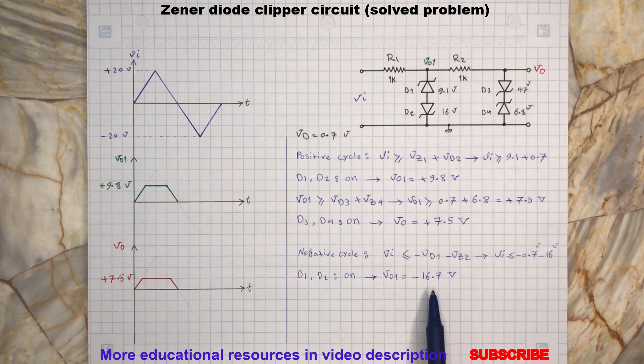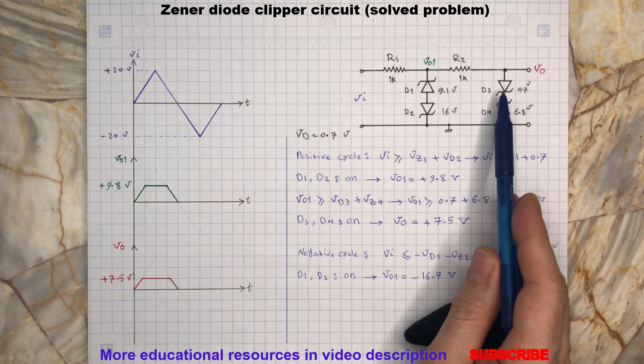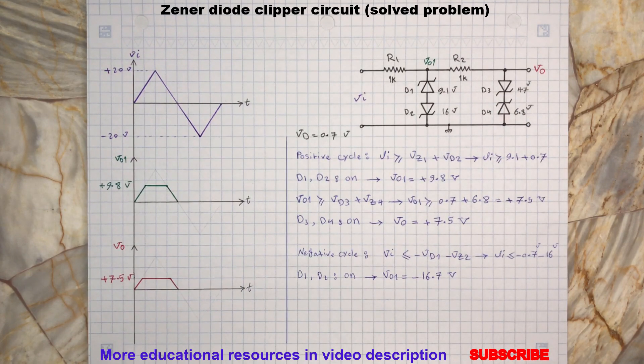Minus 16.7 volts is applied to D3 and D4 through the resistor R2. Therefore D3 will be reversed while D4 is forward biased. With the same discussed analogy, D3 and D4 will start conducting when the voltage at the vo1 terminal reaches minus 5.4 volts. Therefore the output voltage at the vo terminal will be held at this minus 5.4 volt.